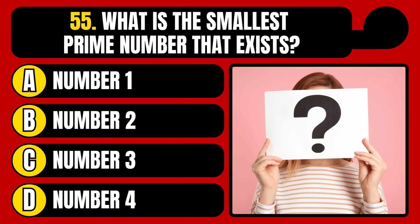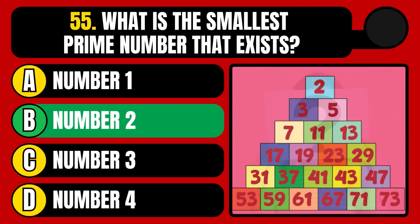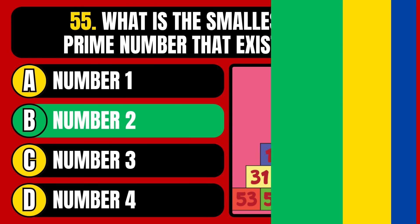What is the smallest prime number that exists? Number 1, number 2, number 3, or number 4? The correct answer is option B, number 2.